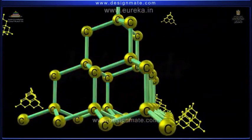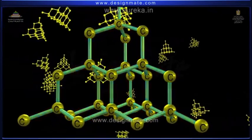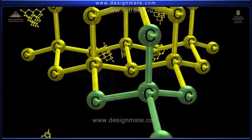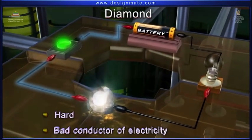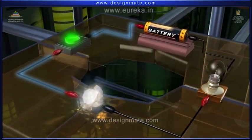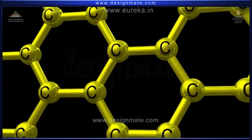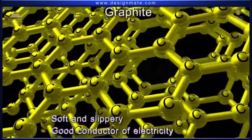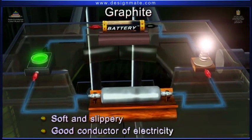Summary. We have studied that in diamond, carbon atoms are bonded to form tetrahedral structure, which makes it hard and a bad conductor of electricity. While in graphite, carbon atoms are bonded to form hexagonal structure, which makes it soft and slippery and a good conductor of electricity.